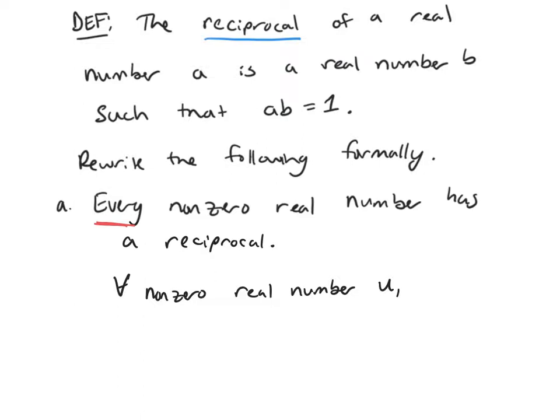And then which type of quantifier should appear next? Well, has a reciprocal. So here you're talking about at least one. So then that means you're talking about existential. There exists a real number v such that.